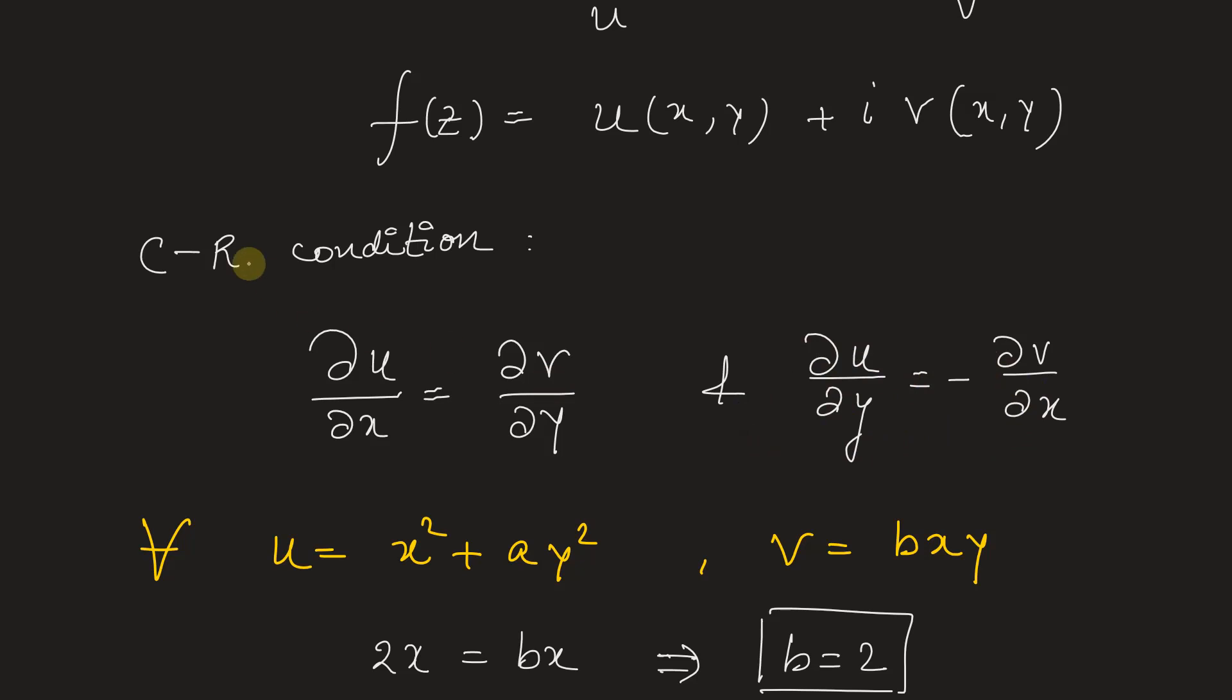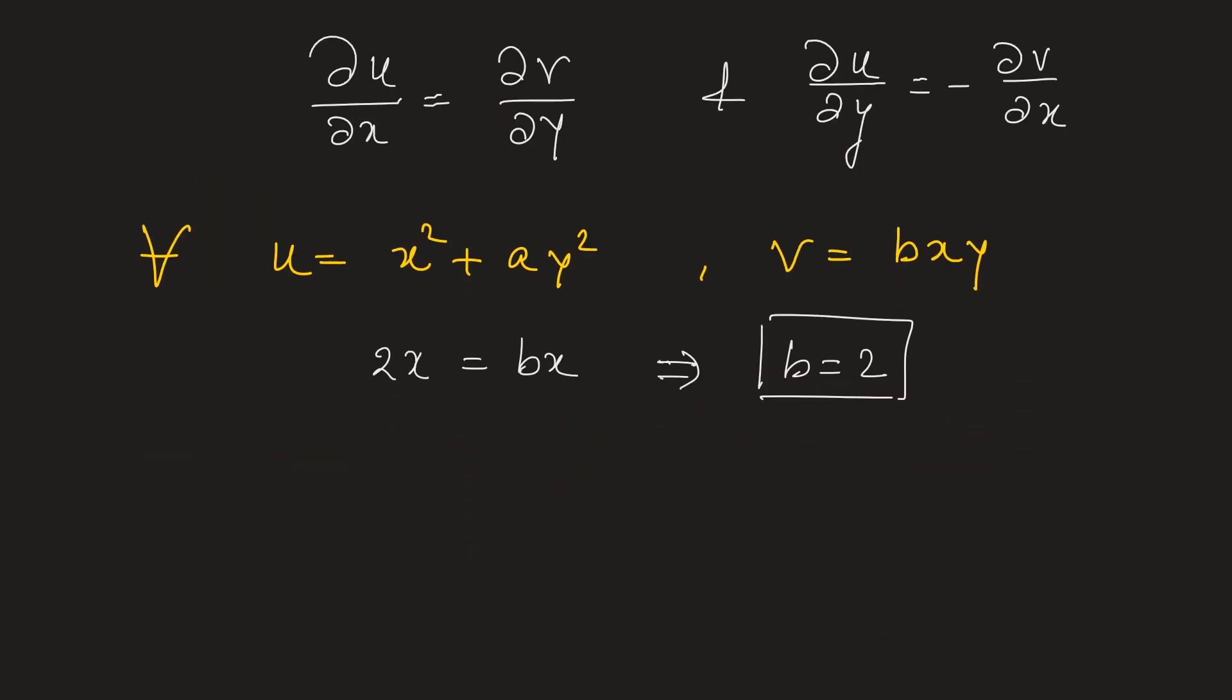Let us use the second CR condition or second CR equation. This is du by dy equals negative of dv by dx. Du by dy, if we differentiate this equation with respect to y we get 2 a y, should be equal to negative of dv by dx which is equal to negative b y.